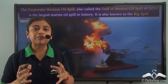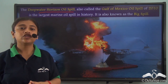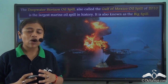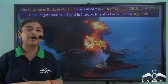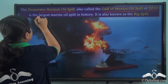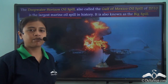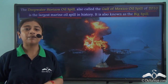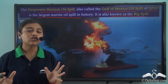The Deepwater Horizon oil spill took place in the Gulf of Mexico, which is why it is also called the Gulf of Mexico oil spill. This oil spill is one of the largest of its kind in the history of marine accidents. This particular incident took place in 2010 and it is the largest marine oil spill in history, also known as the big spill. It caused immense damage to marine animals and plants and also cost a lot of US dollars.